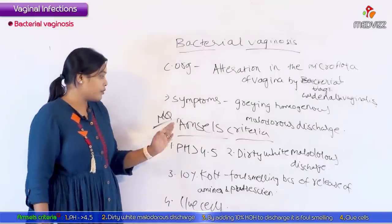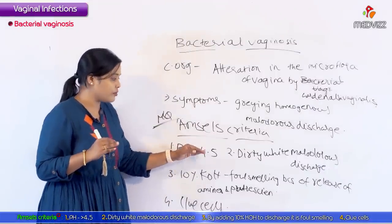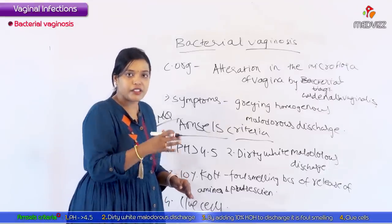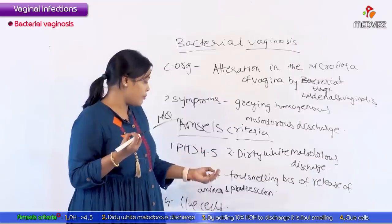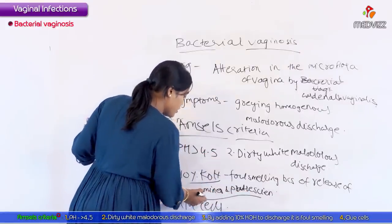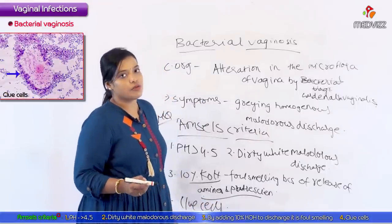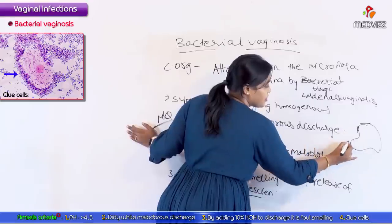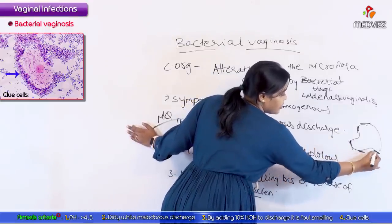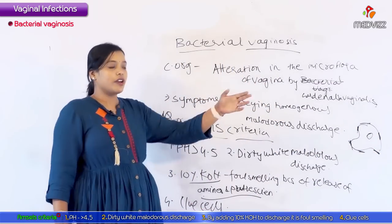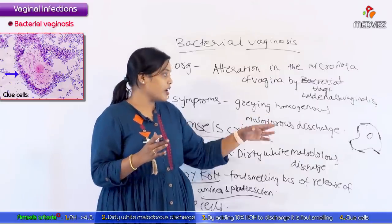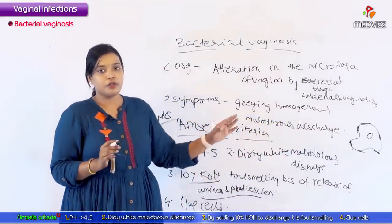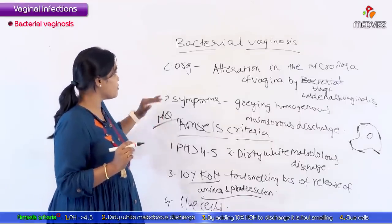Clue cells are vaginal epithelial cells to which the Gardnerella bacteria are attached on the cell wall. Clue cells have been asked as an image-based MCQ — you should recognize them as vaginal epithelial cells with bacteria attached to the wall. Amsel's criteria has been asked multiple times in MCQs, and the causation of bacterial vaginosis has also been asked.